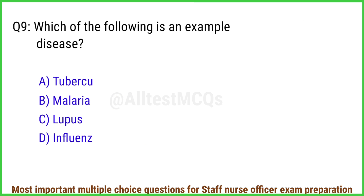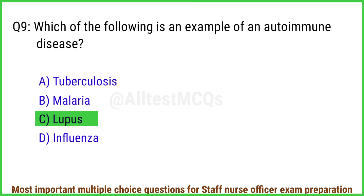Q9. Which of the following is an example of an autoimmune disease? The right answer is option C: Lupus.